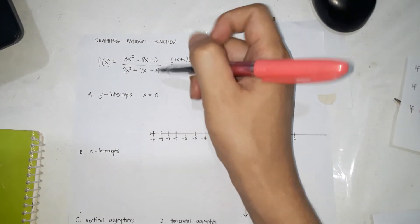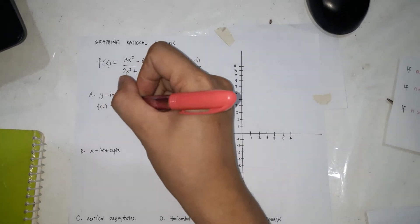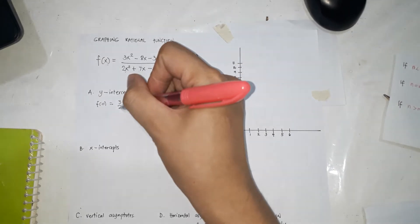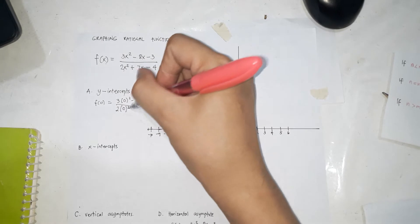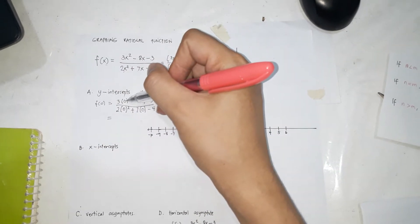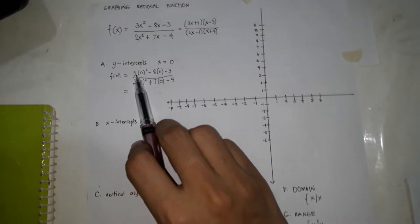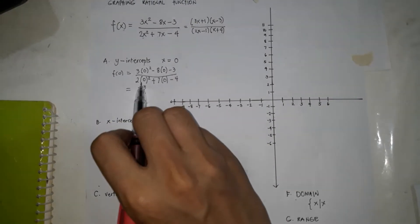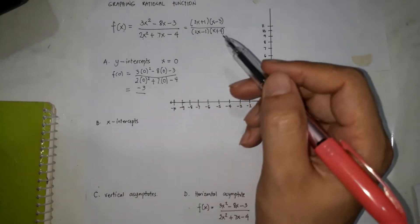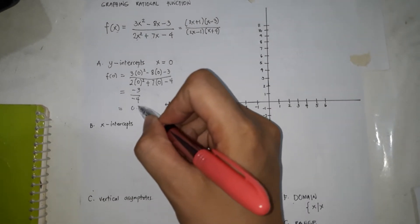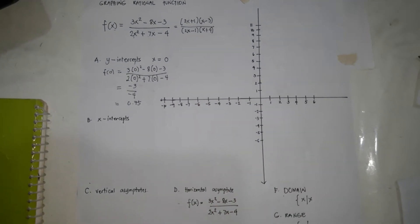So, y-intercept. To find the y-intercept, let x = 0. So f(0) = (3(0)² - 8(0) - 3) / (2(0)² + 7(0) - 4) = (0 - 0 - 3) / (0 + 0 - 4) = -3 / -4. Negative divided by negative — dividing this gives 0.75. So that's our y-intercept.